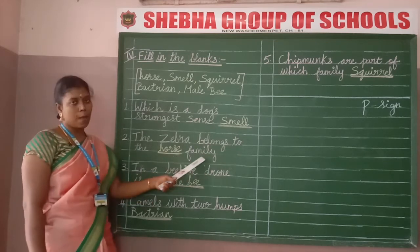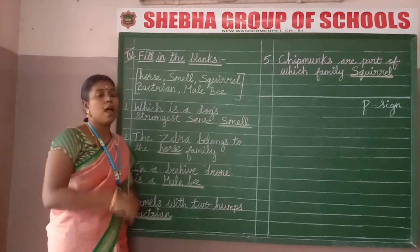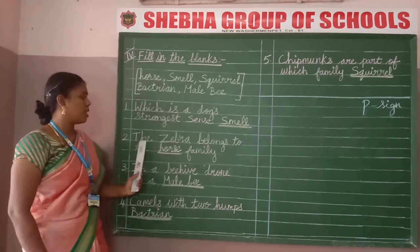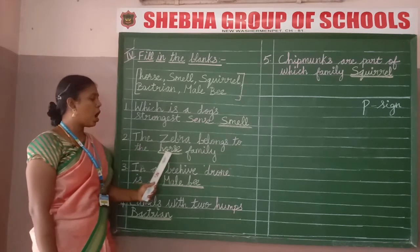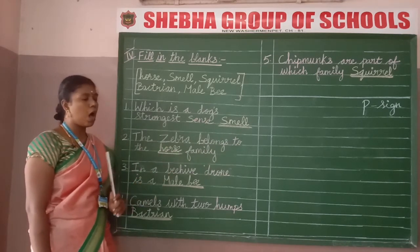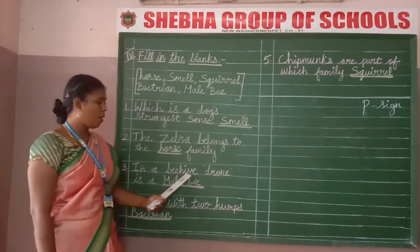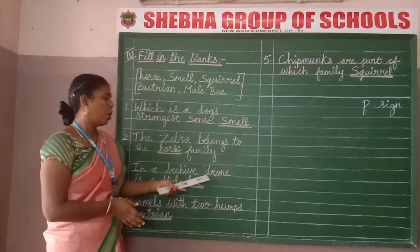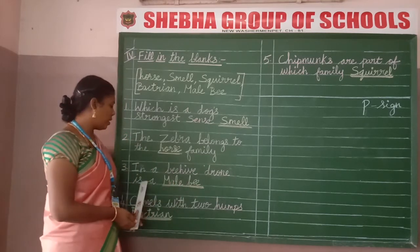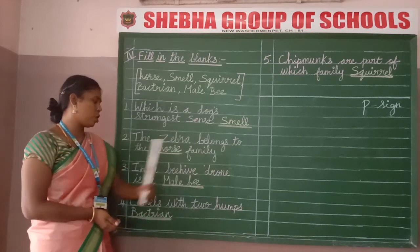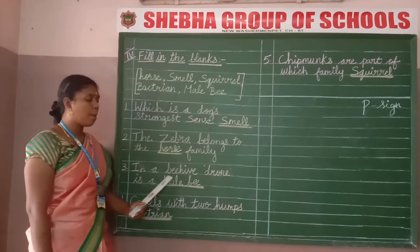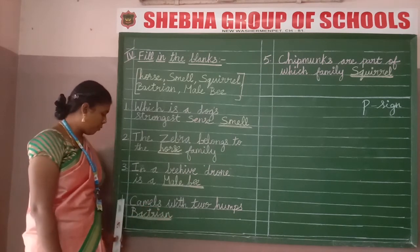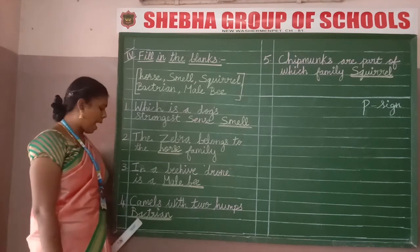Number 2: the zebra belongs to the horse family. The zebra has black and white stripes, and it belongs to the horse family. Spelling of horse: H-O-R-S-E. Number 3: in a beehive, the drone is a male bee. Beehive means thane kudu. Spelling: M-A-L-E B-E-E.